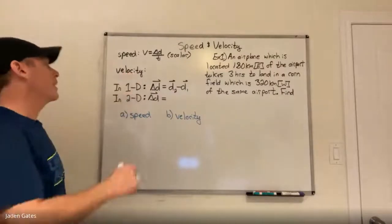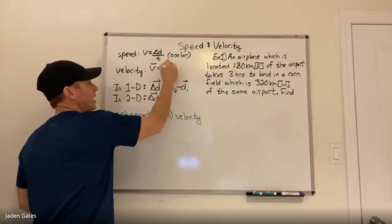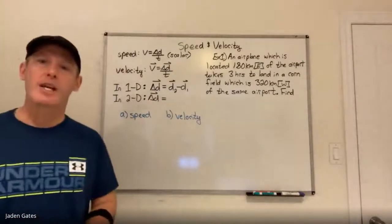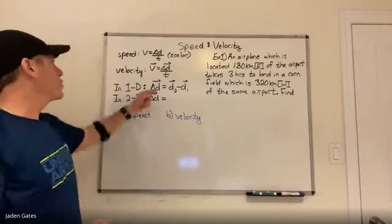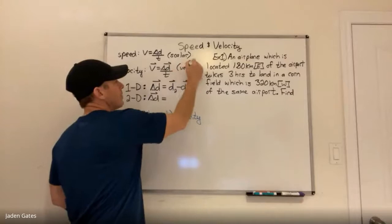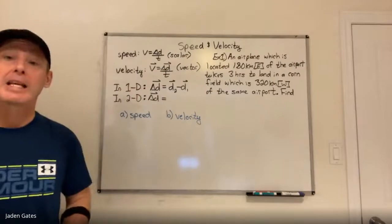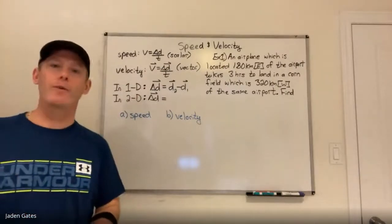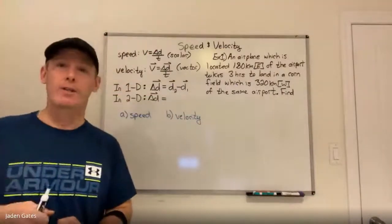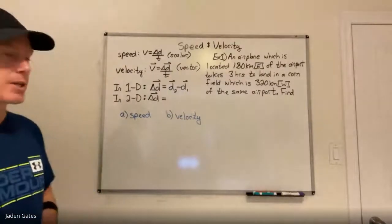Velocity has the formula V-vector equals delta D-vector divided by T — same formula, but there's an arrow over the V and D. That means we're talking about a vector. This delta D is displacement, which is not the total distance traveled, but rather how do we get from where we started to where we finished — in terms of both size and direction. That's what displacement is all about.